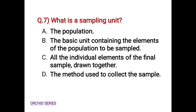Question number 7: what is a sampling unit? The options are: Option A, the population. Option B, the basic unit containing the elements of the population to be sampled. Option C, all the individual elements of the final sample drawn together. Option D, the method used to collect the sample.